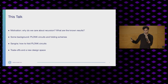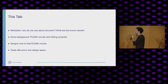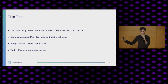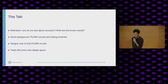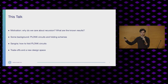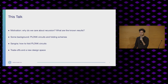Quick overview of what we're going to talk about: I'll give you some motivation — why do we care about recursion, what can we do with these things, what are the best-known results? A bit of background to get everyone to the same level: what are Plonk circuits, what is the folding scheme? Then we'll jump into Sangria — how do we actually fold these circuits? And then I'll describe the trade-offs: what are the costs, how do they scale, and what is the design space we have to play with.